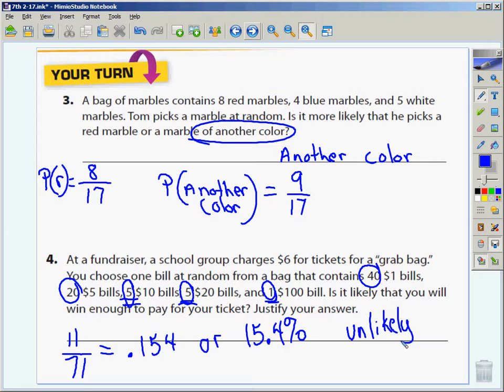0% means impossible. It can't happen, not possible. 100% means certain. It is absolute. It's guaranteed going to happen. Certainly.